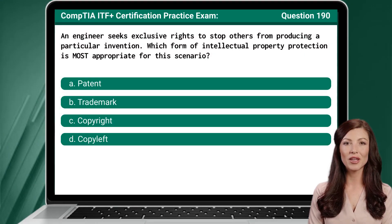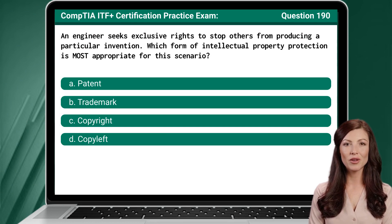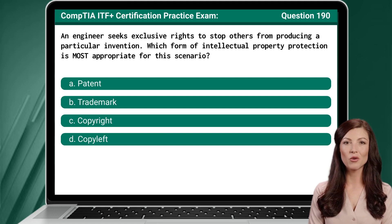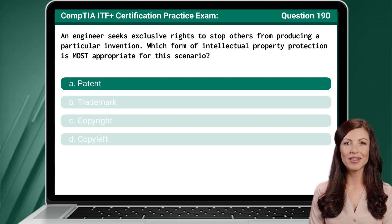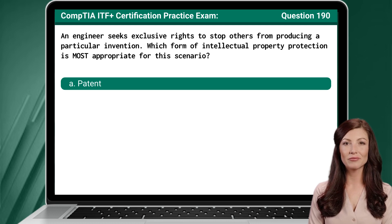Question 190. An engineer seeks exclusive rights to stop others from producing a particular invention. Which form of intellectual property protection is most appropriate for this scenario? The answer is A: Patent.